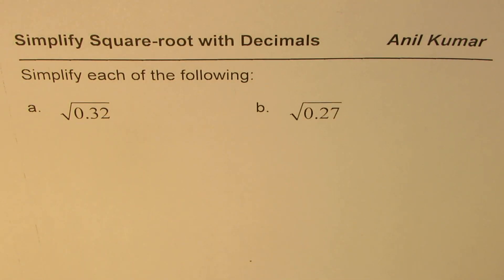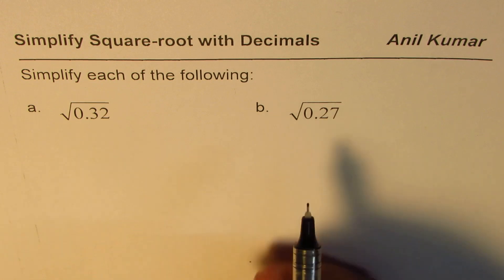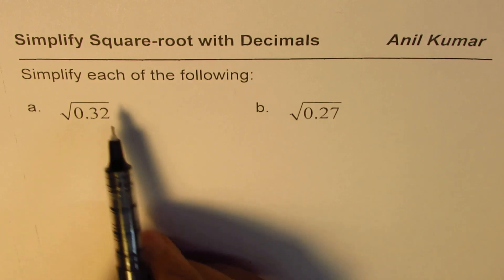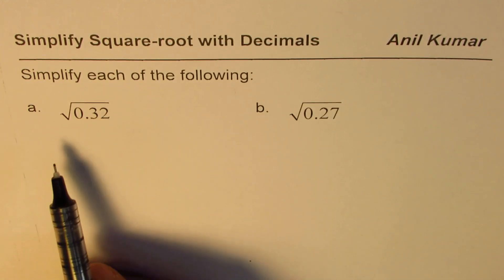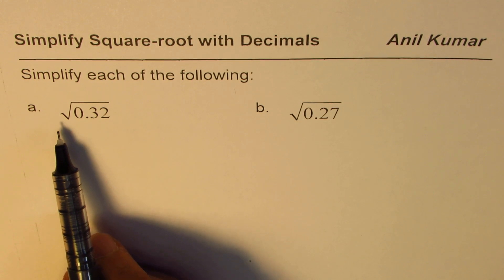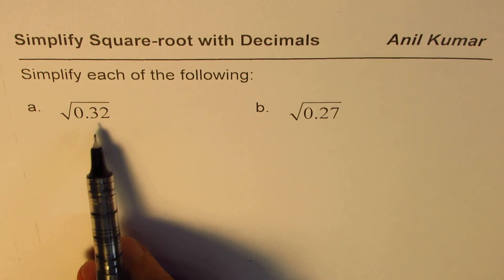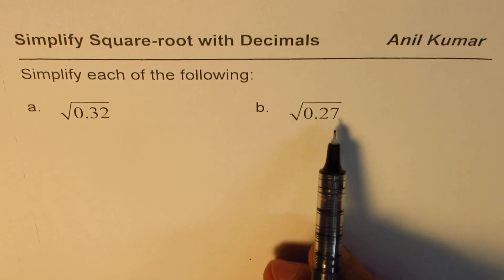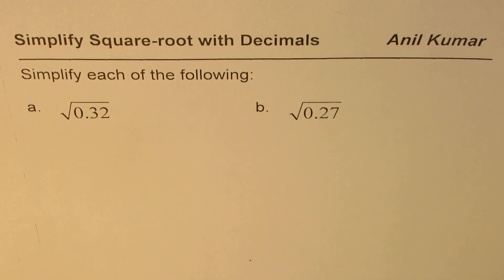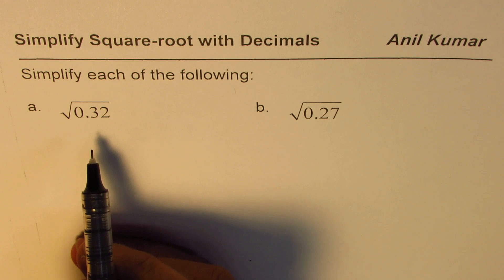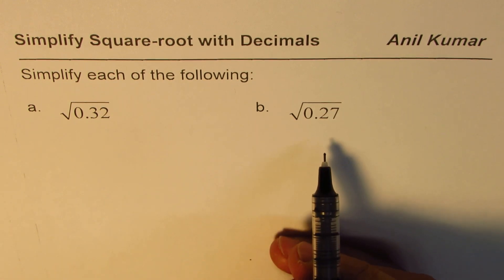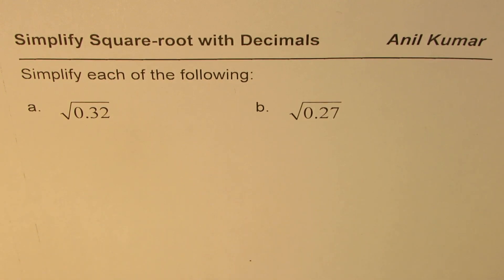I'm Anil Kumar and in this video we will learn how to simplify square roots with decimals. We have two examples here — the question is to simplify each of the following. The first one is square root of 0.32, and part B is square root of 0.27. We will understand the method to solve the first one, and then you can pause the video and apply the same method to solve the second example.